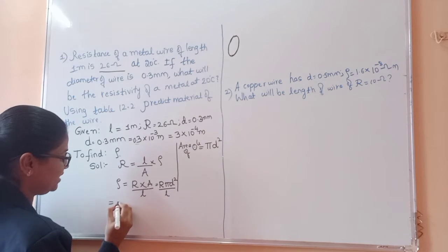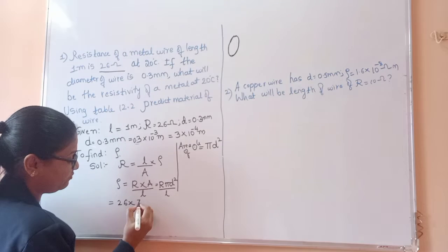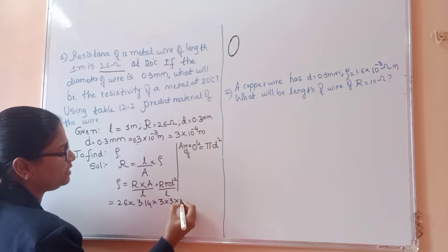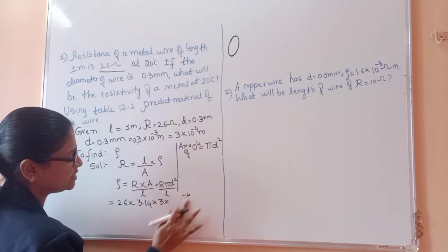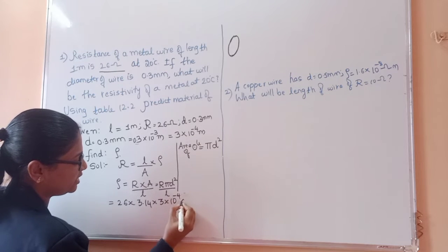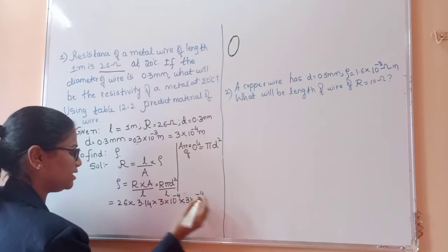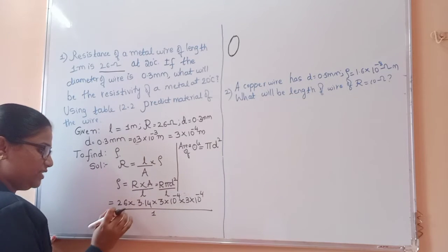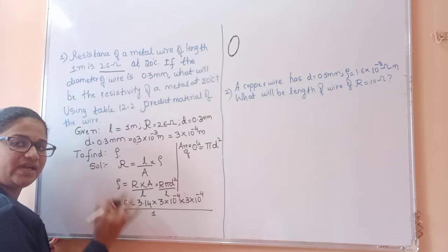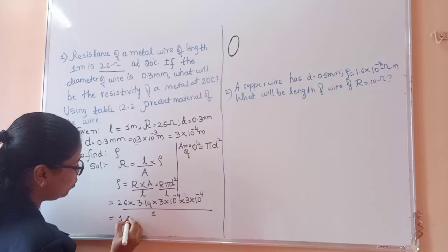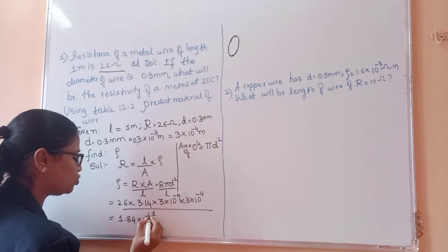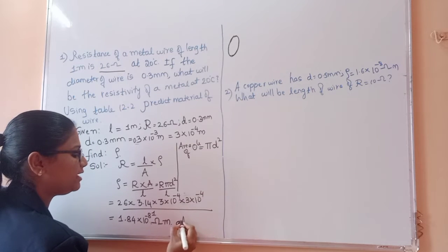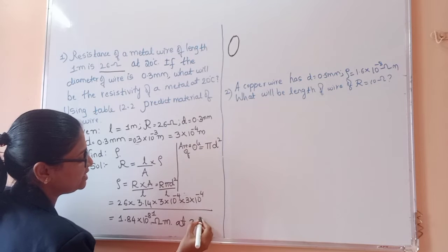Substituting values: R = 26, π = 3.14, D = 3 × 10⁻⁴ meter (so D² = 9 × 10⁻⁸), divided by L = 1. When we calculate, the answer we get is 1.84 × 10⁻⁸ ohm meter. This is the resistivity at 20 degrees Celsius.